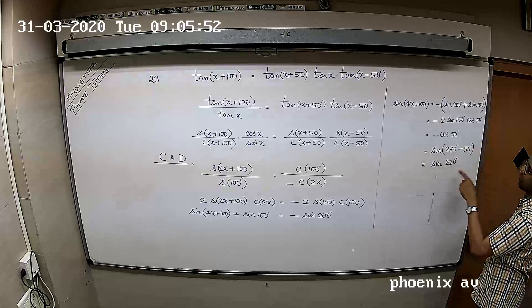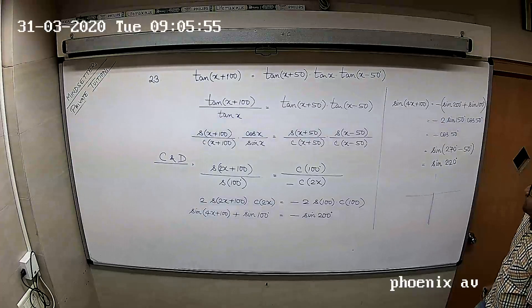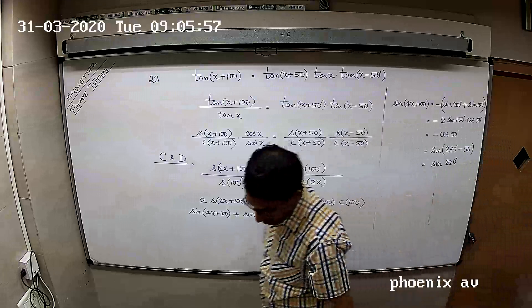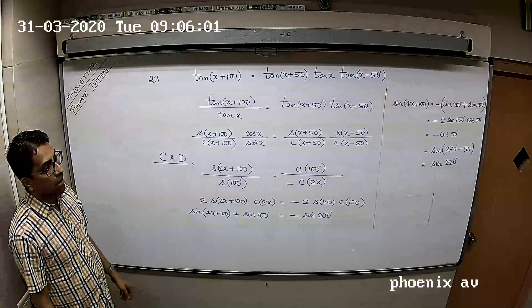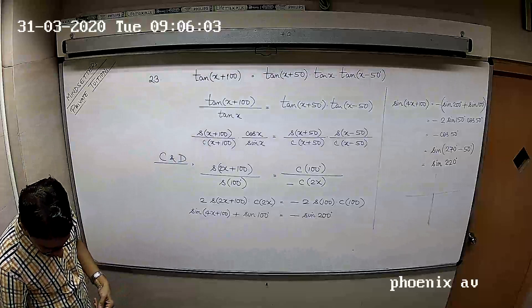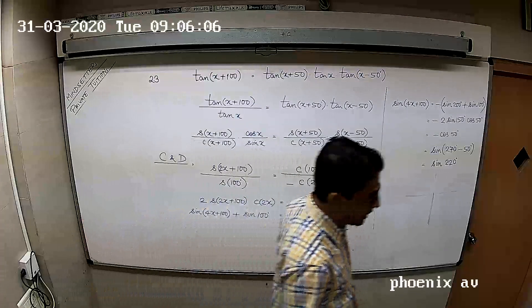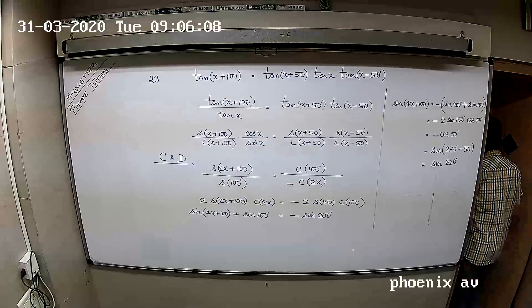But read the question. The question is, you want the smallest positive value. So smallest positive, third quadrant option should be the right one.